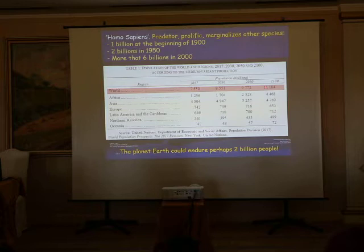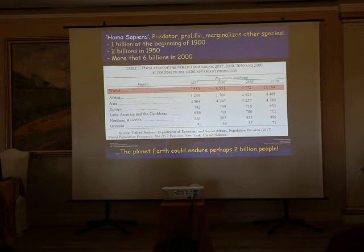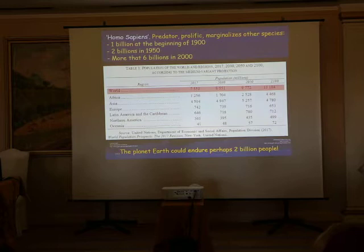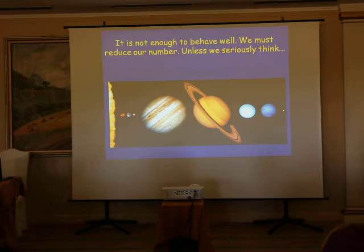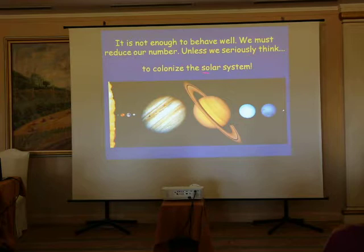The planet Earth could perhaps endure two billion people. So we have a serious problem of overpopulation and all its consequences like pollution, food, etc. It is not enough to behave well — we must reduce our numbers unless we seriously think about colonizing the solar system.